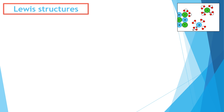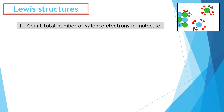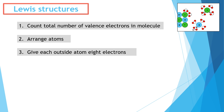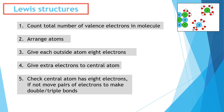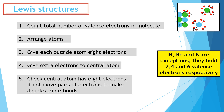When drawing Lewis structures, first count the total number of valence electrons in the molecule. Arrange the atoms with the most likely central atom in the middle and the others around it. Give each outside atom eight electrons in their outer shell. Give any extra electrons to the central atom, then check the central atom has eight. If not, move electron pairs to form double or triple bonds. Three exceptions: hydrogen wants only two, beryllium wants four, and boron wants six.